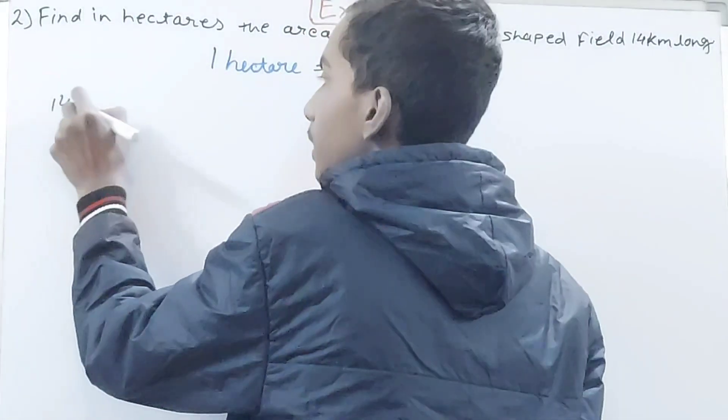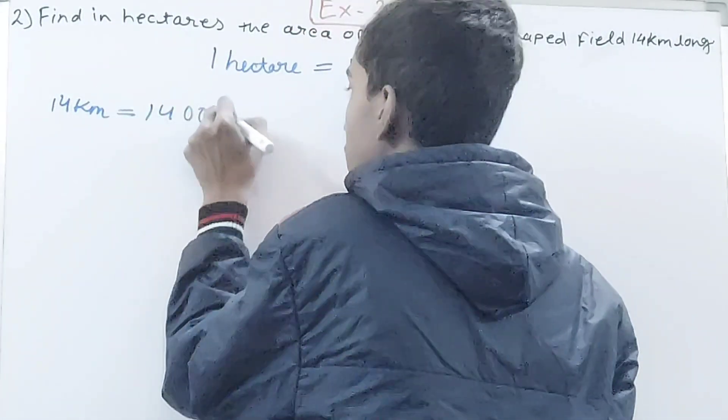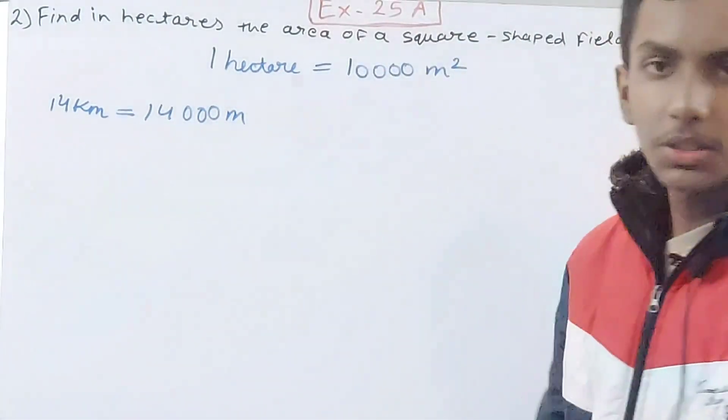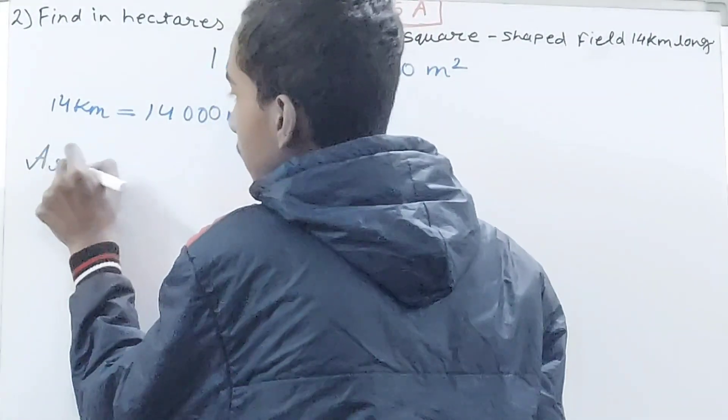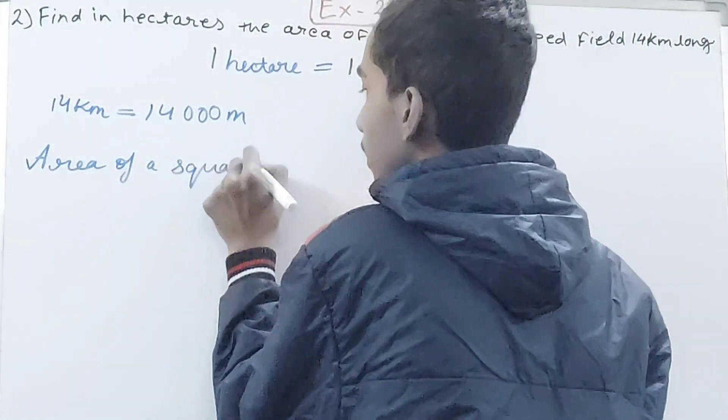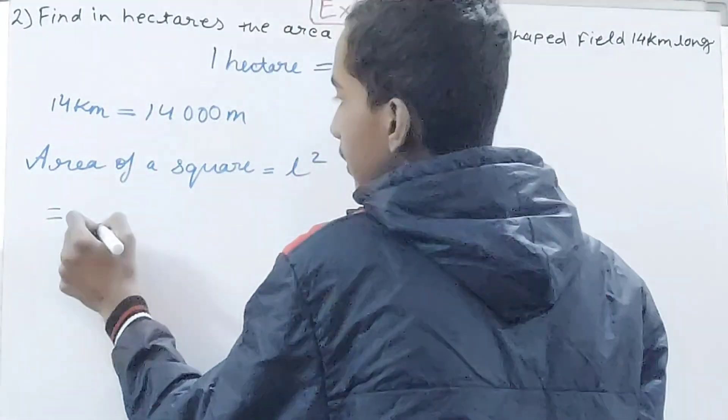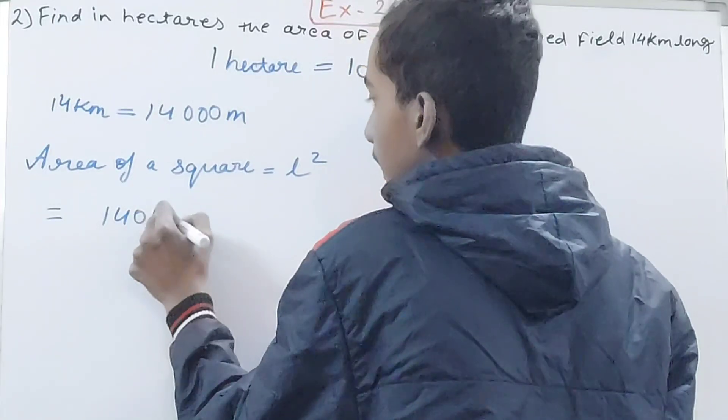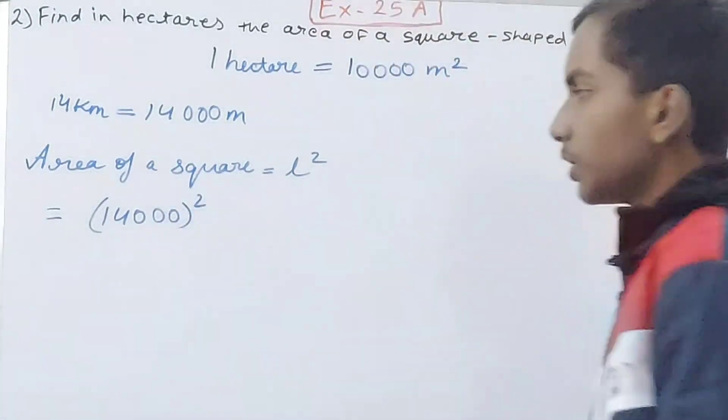Now over here we have 14 in kilometers, so what I will do: 14 kilometers, that is how many meters? 14,000 meters. One kilometer is 1,000 meters, 14 kilometers is 14,000 meters. And area of a square is L squared.